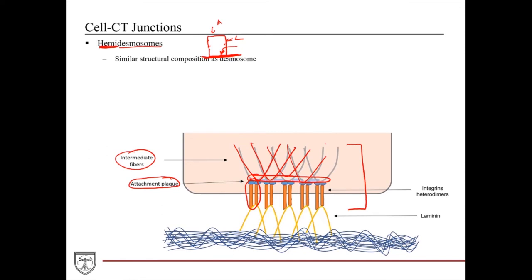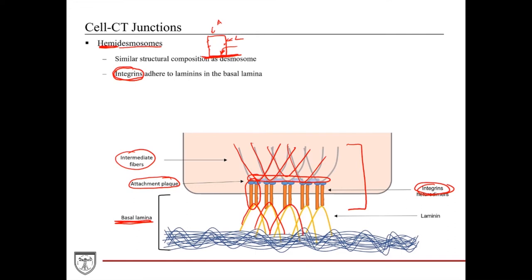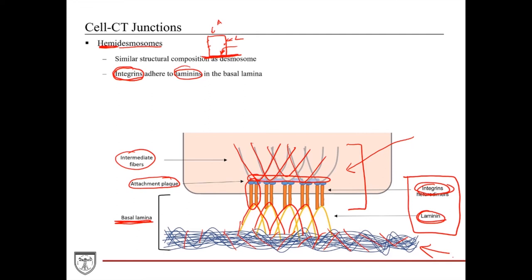The hemidesmosome binds to the basal lamina, which is the ECM produced and secreted by the epithelial cells themselves. In terms of transmembrane proteins, hemidesmosomes use integrins rather than cadherins. Integrins are specialized to bind to high-molecular-weight extracellular matrix proteins called laminins, which are themselves embedded into more substantial protein filaments. The strong interactions between integrins and laminins, reinforced by intracellular and basal lamina components, hold the epithelial tissue tightly onto the basal lamina, then to the basement membrane, and then to the connective tissue.